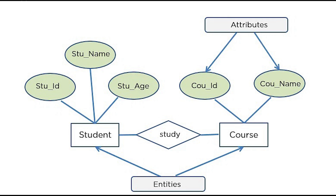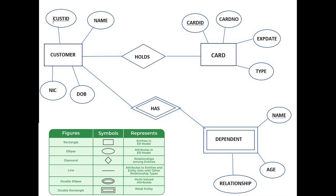Let's take a quick look at this diagram. There is a student and course entity. Student has attributes student ID, student name, and student age. Student ID is a unique primary key because it is unique and every ID will be different — it is used to differentiate all the students. Student name and student age could overlap. The course has attributes course ID and course name, where course ID is the unique primary key. Course name can also be a primary key as long as there are no overlapping names. The relationship shown between student and course is 'study' because the student studies the course.